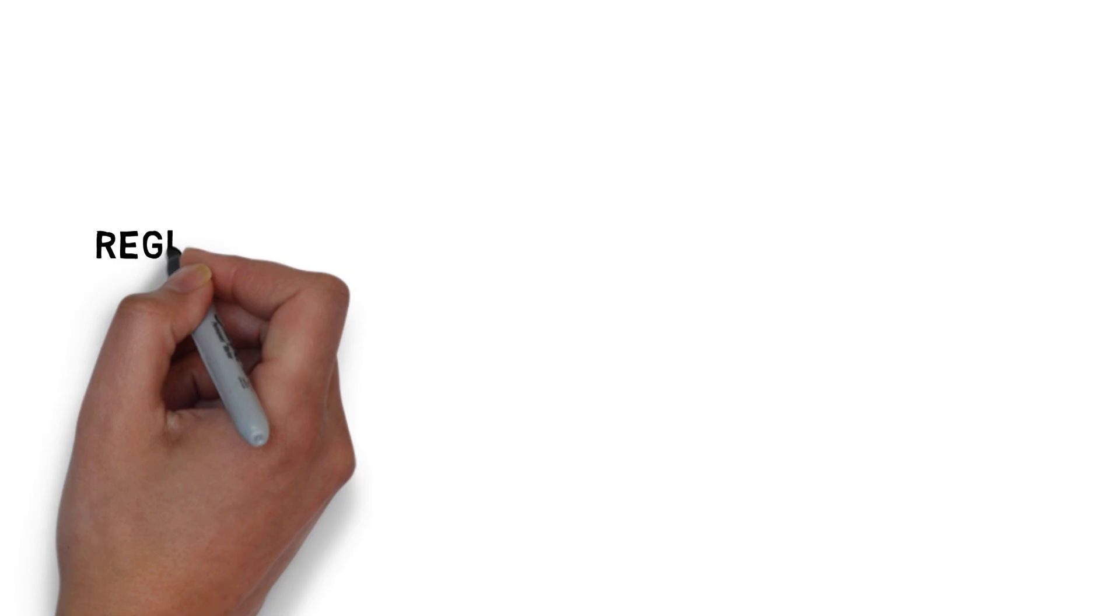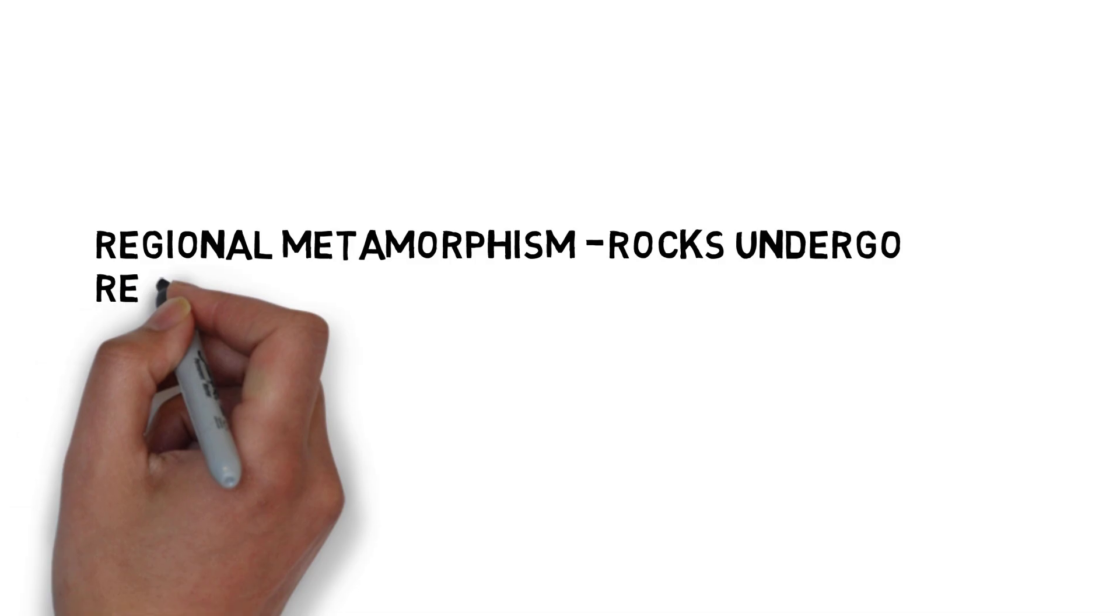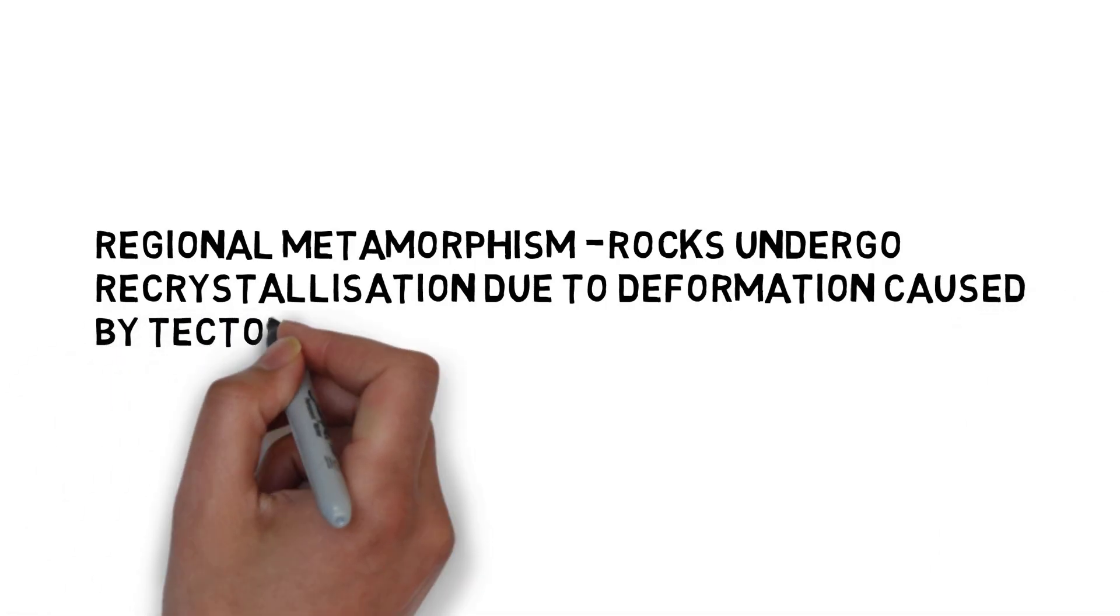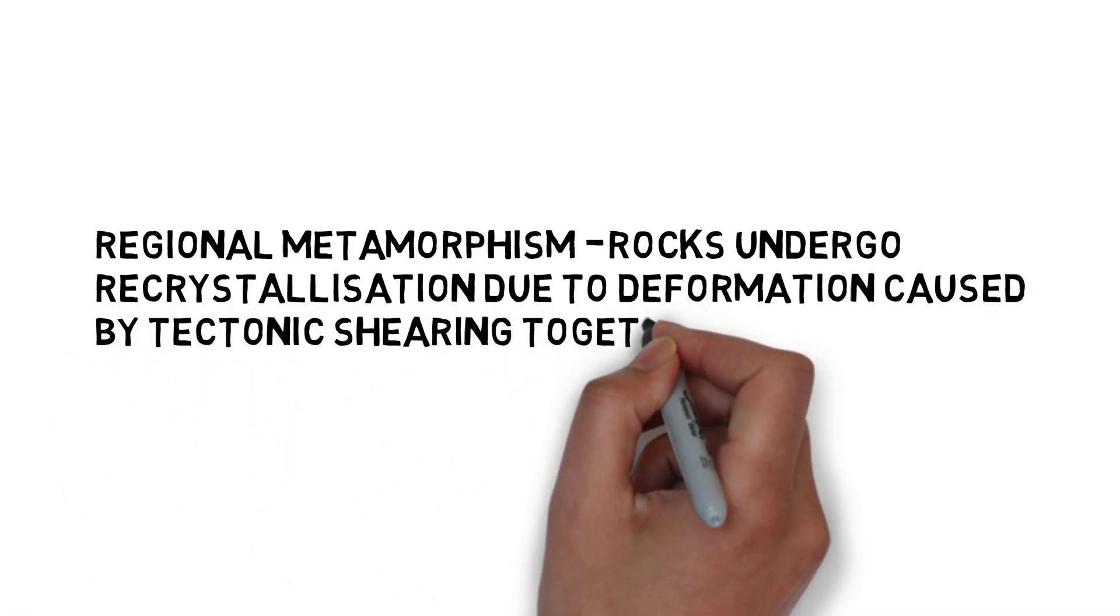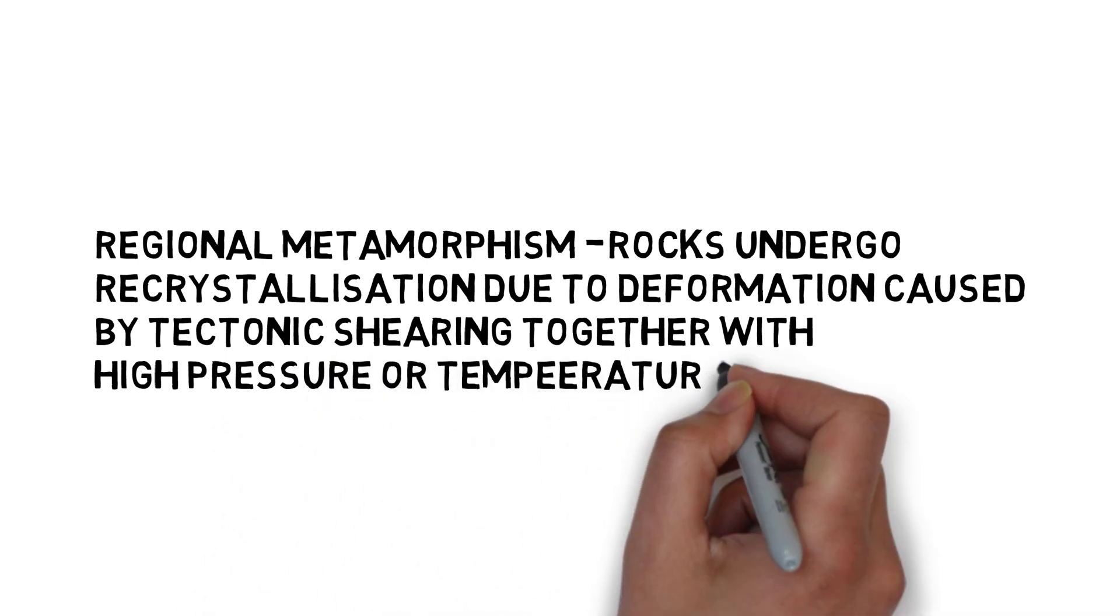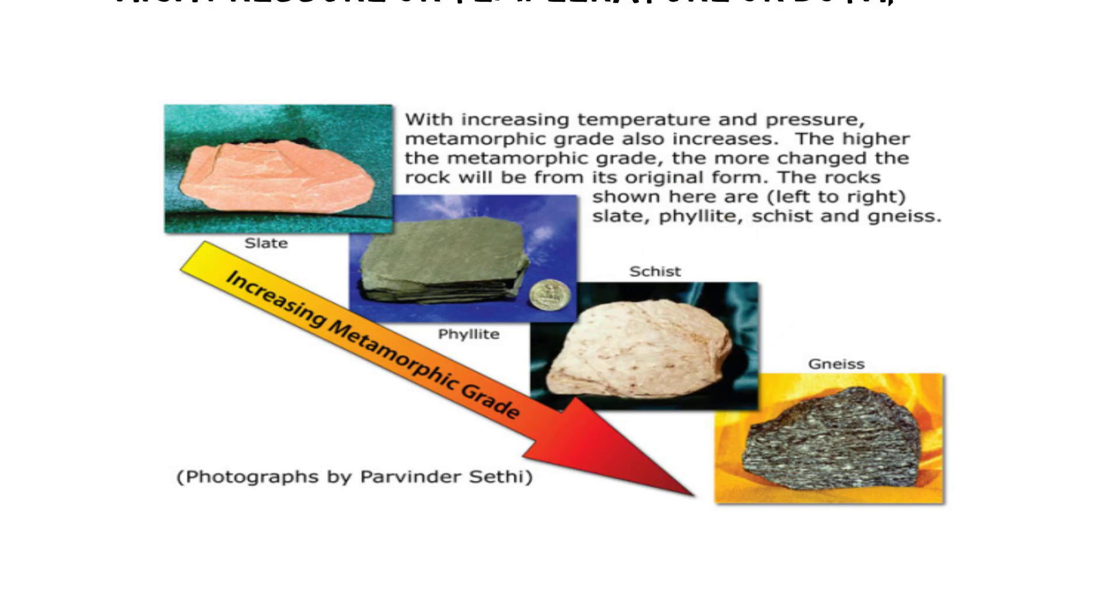Second form of thermal metamorphism is regional metamorphism, wherein rocks undergo recrystallization due to deformation caused by tectonic shearing together with high pressure or temperature or both. In this image you can see that how with increasing temperature different grades of metamorphic rocks are formed, from slate to phyllite to schist to gneiss.